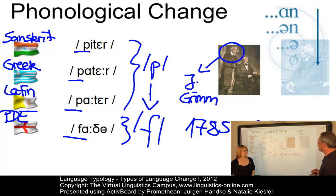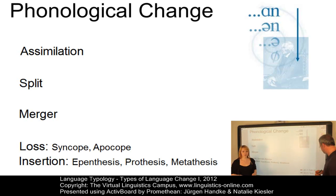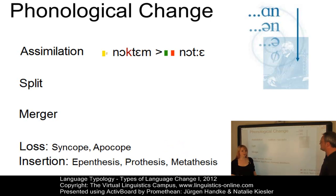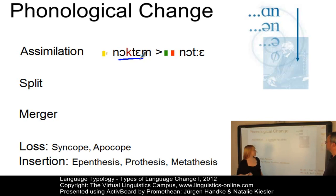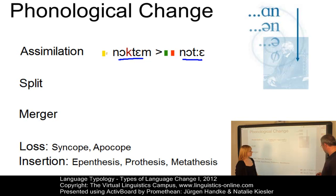Today we know there are numerous processes that affect sound change. Let us illustrate some of them. Assimilation is defined as a sound change where one phoneme is influenced by the pronunciation of a neighboring sound. As in our example, from Latin 'Noctem' we have the C and the T, whereas in Italian 'Norte' we only have the T. The voiceless plosive C changes to T in Italian under the influence of T — hence, a sort of regressive assimilation takes place.